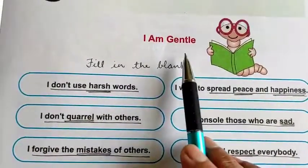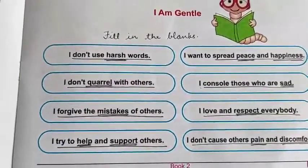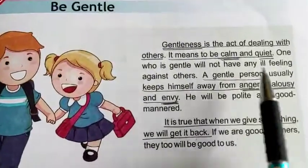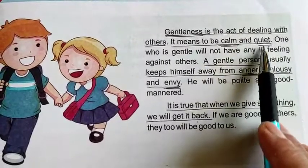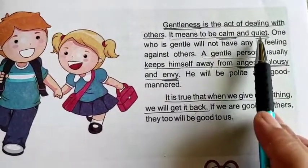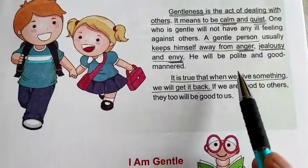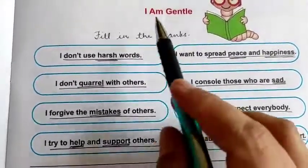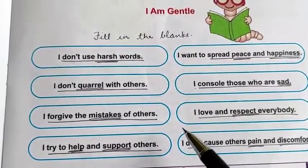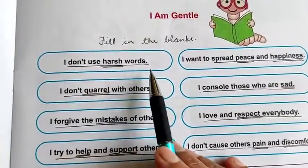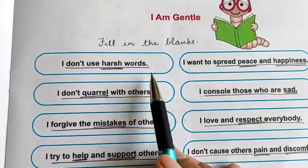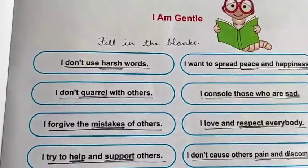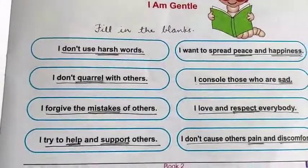Next is 'I am gentle.' Here we are going to read the ways how we can be gentle. These can come in the form of fill-in-the-blanks in exams as well — I have underlined a few sentences in the book. So you can learn these from the book itself. These are the ways through which we can be gentle. First: I don't use harsh words. A gentle person never uses harsh words, never abuses anyone, never uses any wrong words. He is always polite with others.